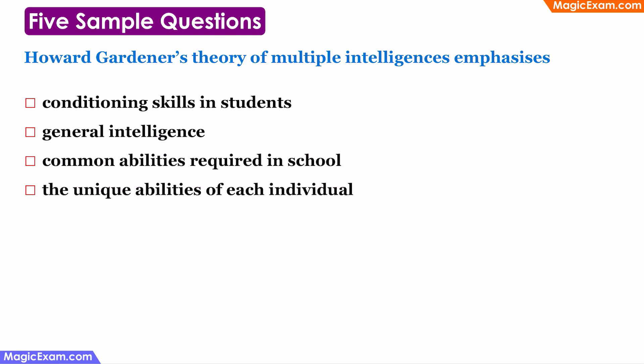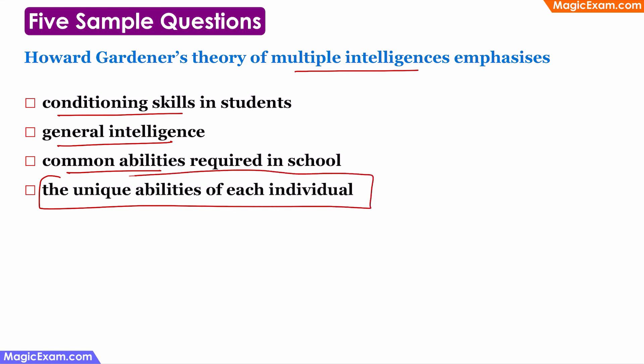Sample question: Howard Gardner's theory of multiple intelligences emphasizes which of the following? The theory is not talking about conditioning skills, not about one general type of intelligence, and not about a common ability required in school. This theory is essentially talking about the unique abilities of each individual — because if there are different types of intelligences, then everybody will have a different capability or unique ability. Therefore, Howard Gardner's theory of multiple intelligences emphasizes the unique abilities of each individual.